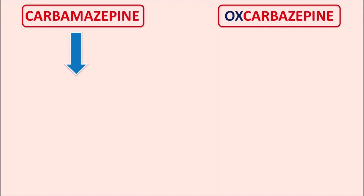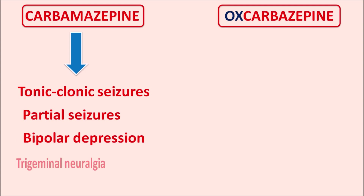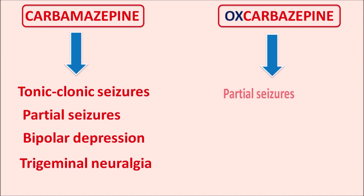Carbamazepine is used in various conditions such as tonic-clonic seizures, partial seizures, bipolar depression, and as an analgesic in the treatment of trigeminal neuralgia. On the other hand, oxcarbazepine — despite being a newer generation drug with less enzyme induction and less hormonal effect — is particularly indicated only for the treatment of partial seizures.